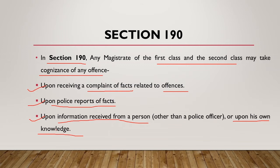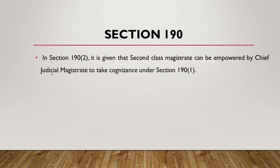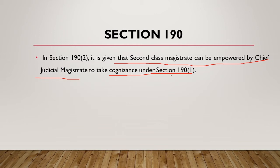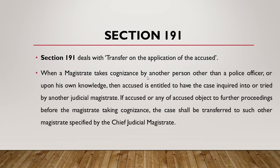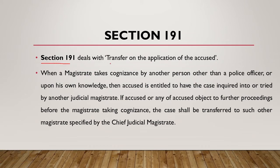Section 190 Clause 2 says that a Second Class Magistrate can be empowered by the Chief Judicial Magistrate (CJM) to take cognizance under Section 190 Clause 1. While Section 190 Clause 1 stated that both JMFC and JMSC can take cognizance, Section 190 Clause 2 clarifies that a Second Class Magistrate can also be empowered by the CJM.